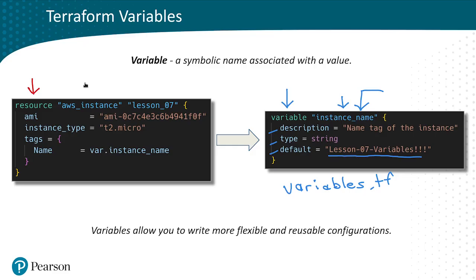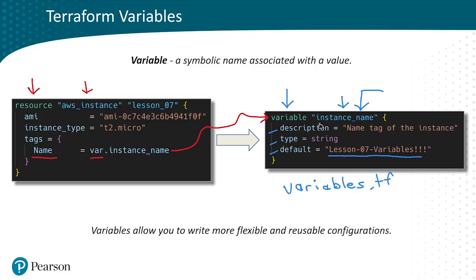On the left hand side we have the resource block, very similar to the resources we've been working with before. We have an AWS instance with a Terraform name, but here instead of assigning the name in the tag section manually, we're going to use a variable reference. To call on the variable we use var dot and the name of that symbolic variable — var.instance_name.